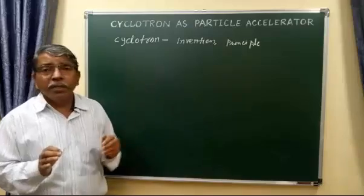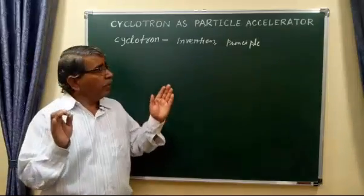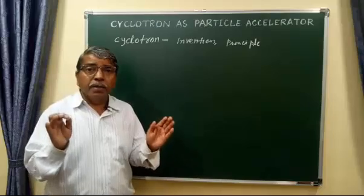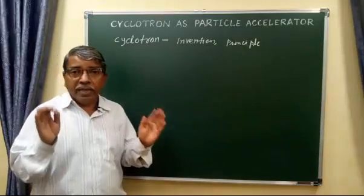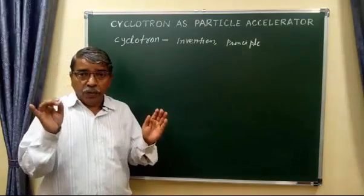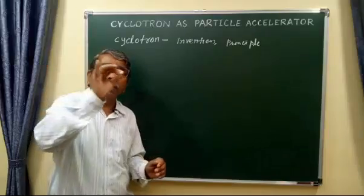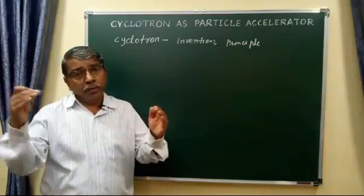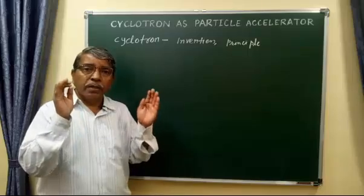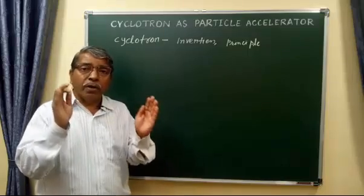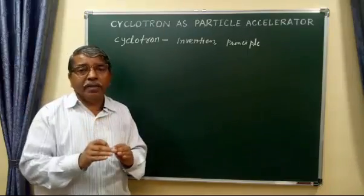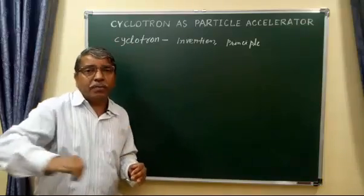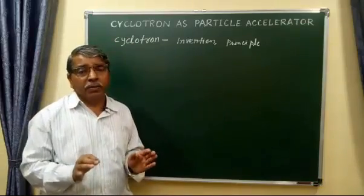What is the principle on which the cyclotron works? The principle is that when a charged particle moves in a path perpendicular to a uniform magnetic field, the magnetic Lorentz force acts on the particle, and so the particle moves in a circular path. This is the principle of the cyclotron.